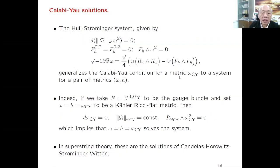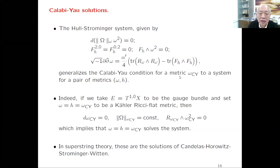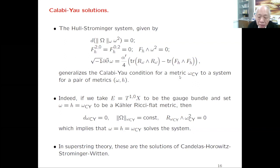This system generalizes the Calabi-Yau condition. If I take the vector bundle E to be the tangent bundle itself and use the standard connection from the Kähler metric, then these equations are trivially satisfied: the metric is Kähler so d-omega equals zero and d-d-bar of the holomorphic form is zero; the Calabi-Yau condition says the norm of the holomorphic form is constant; and all these are trivially satisfied. So the Strominger system can be considered a generalization of the Calabi-Yau metric.